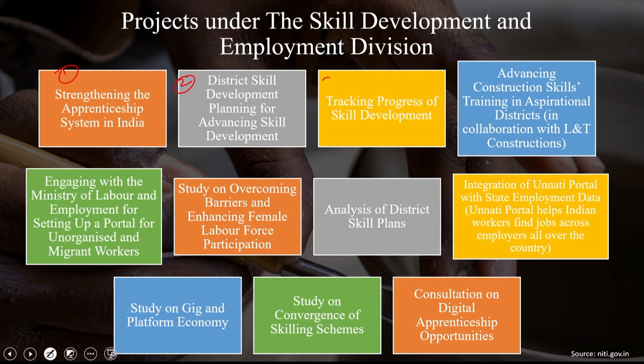The third project is tracking progress of skill development — it is not just about imparting skill development but also tracking the progress of what has happened. The fourth involves advancing construction skills training in aspirational districts in collaboration with large-scale organizations like Atlantic Constructions. There are other important projects under the skill development mission, like engaging with the Ministry of Labour and Employment for setting up a portal for unorganized and migrant workers. This will ensure that people who are not in the organized sector are available in a database and can be employed quickly without delay.